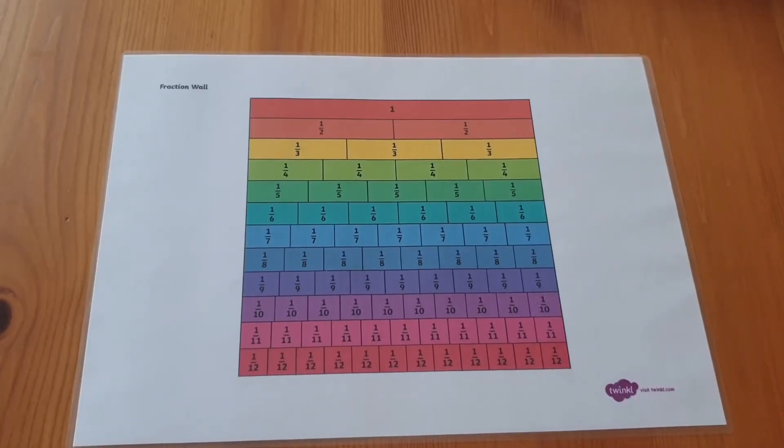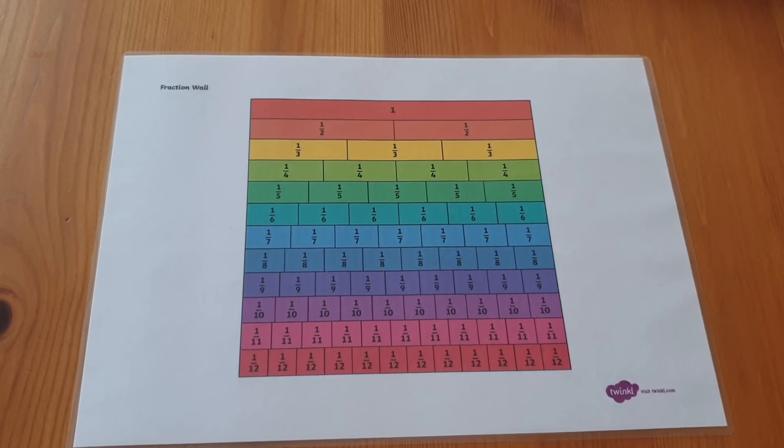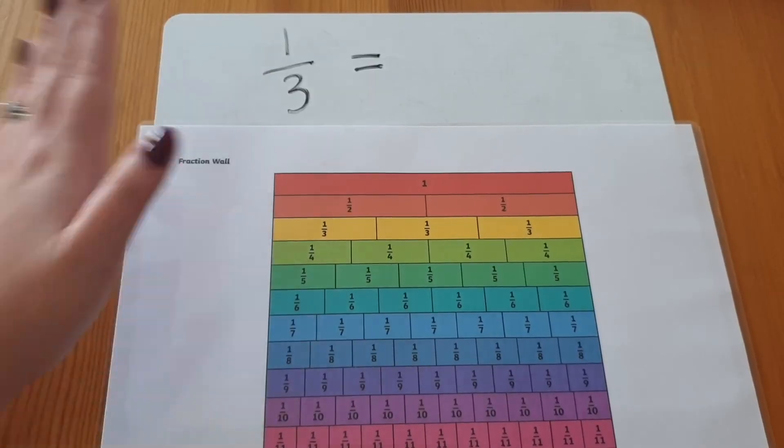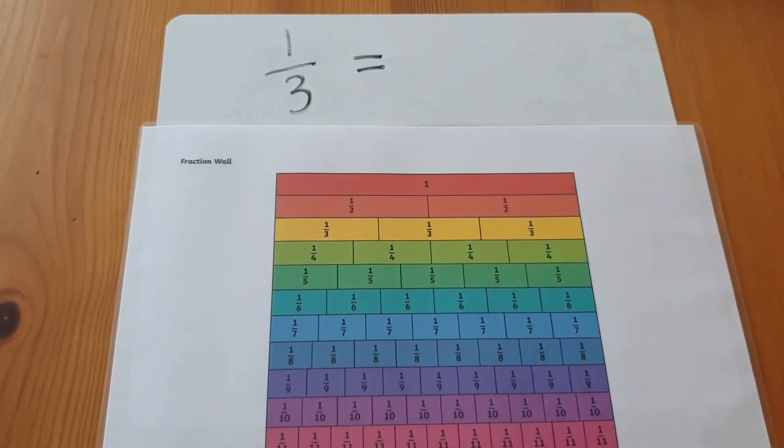Fraction walls are a great way to see how fractions are part of a whole. Using a piece of card so that you can cover the fractions completely, you could ask your child to find a fraction equivalent to another fraction. For example, find a fraction that is equivalent to a third.